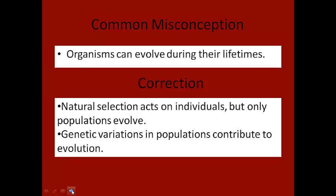What actually causes that evolution to happen is those genetic variations in populations. Within a population, you have lots of different types of traits, and those traits will come and go depending on what the environment favors. So that population will change according to the environment, according to what helps organisms survive and what causes them to die.